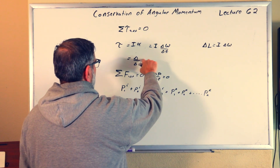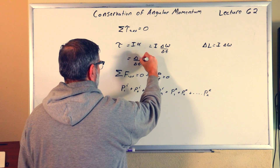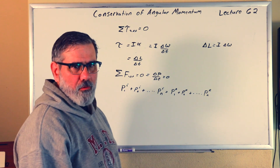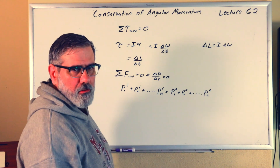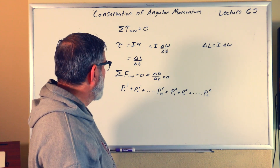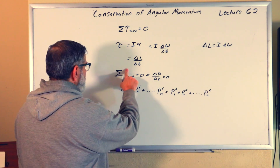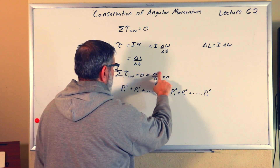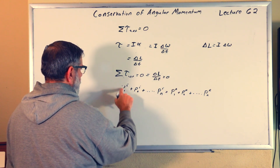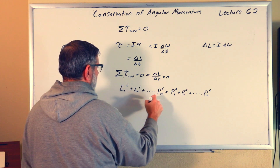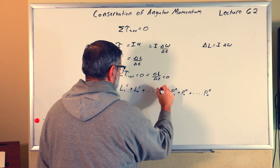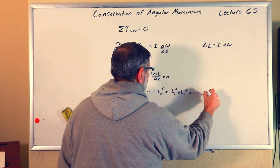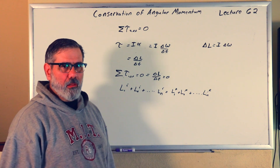We can write that torque equals delta L over delta T. So it's delta P over delta T for linear momentum, and delta L over delta T for angular momentum. The sum of the external torques being zero implies delta L over delta T equals zero, which means we replace all the P's with angular momentum L for each particle. This is for a system of N particles — completely analogous.